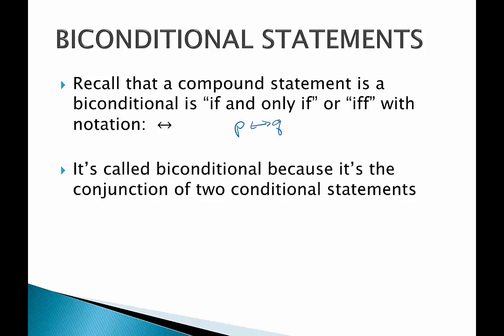A biconditional, it's called a biconditional because it's a conjunction of two conditional statements. So it's the conjunction of if P, then Q, and if Q, then P. So it's the conjunction of those two statements. That's what that biconditional means.